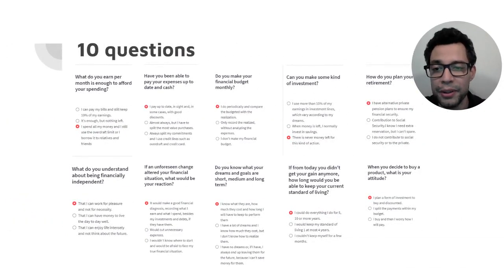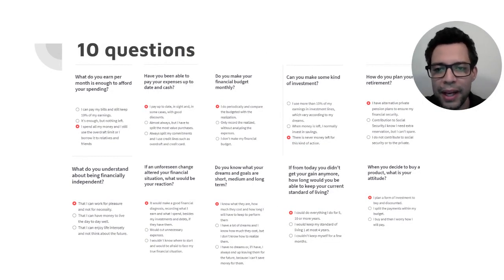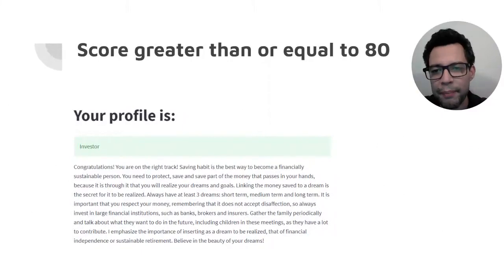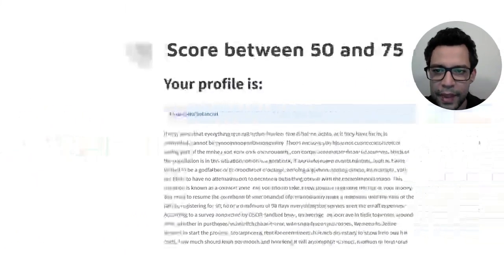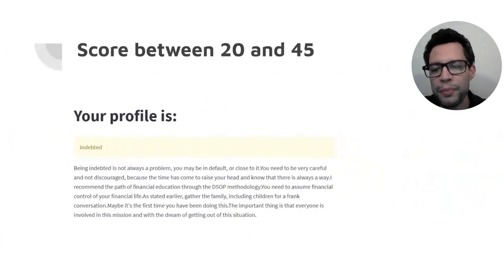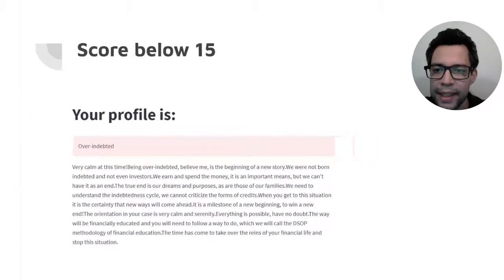With all the answers from the user, the app computes the final score and assigns a Financial Behavior profile to this user. If the score is above 80, the profile is Investor. If the score is between 50 and 75, the profile is Financially Balanced. If the score is between 20 and 45, the profile is Indebted. And if it's below 15, the profile is Over-Indebted.